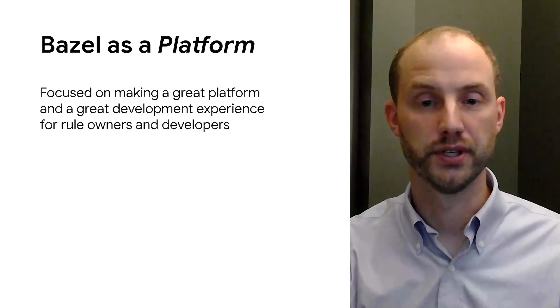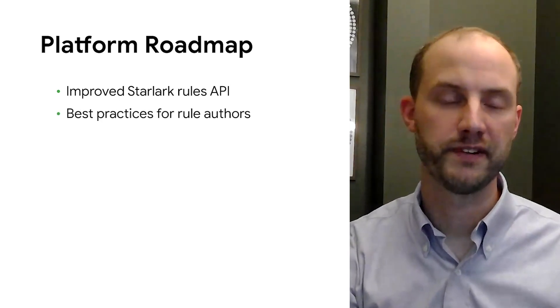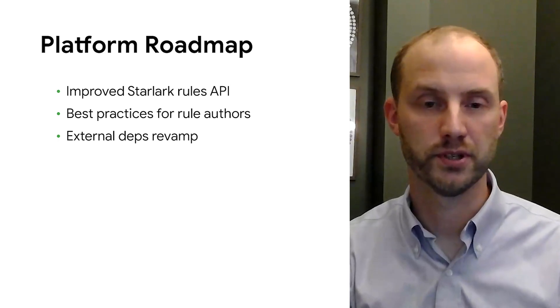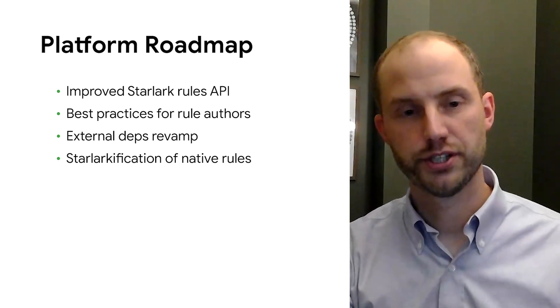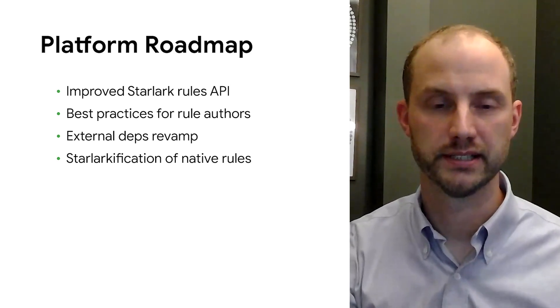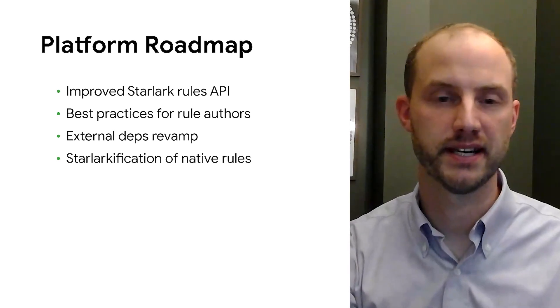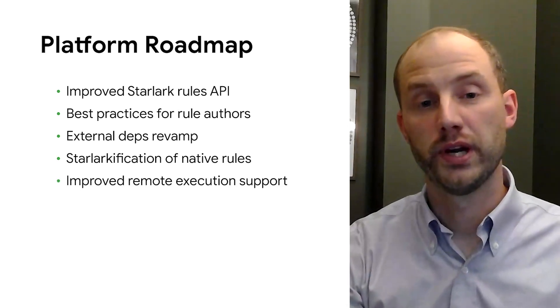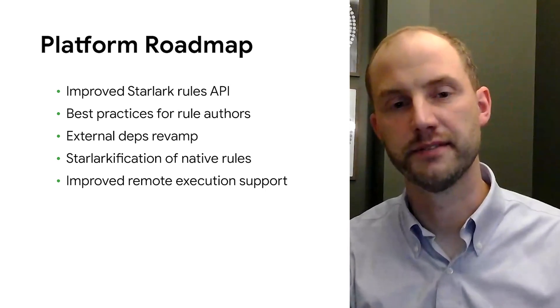That will be accomplished through a number of improvements to Bazel and its ecosystem. For one, we really want to improve the Starlark rules API, develop best practices for rule authors, revamp our external dependency support to make it a lot more usable for developers. We want to Starlarkify all of the native rules, which ensures that Starlark is a fully capable mechanism for arbitrary rule extensions and that we aren't cheating by programming against native Java APIs inside of Bazel. And finally, we are investing a lot more in improved remote execution support, which we've identified as a critical need for Bazel customers.